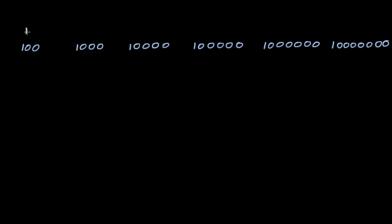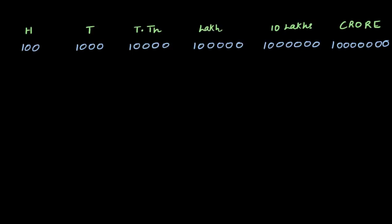But you know that all these have names in the Indian system. So if I use green for the Indian system, then I know this is 100, this is a thousand, this is 10,000, this is a lakh, this is 10 lakhs, and this is a crore — that's the big guy. So: hundreds, thousands, 10,000s, lakh, 10 lakhs, and crore.